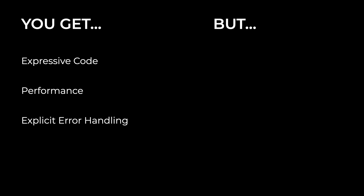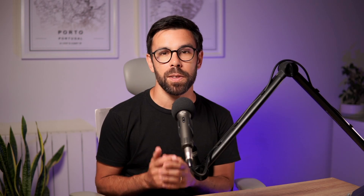However, the result pattern doesn't feel natural — it's not the obvious way to do things in object-oriented programming, and many developers don't use it. That makes it hard to sell to your team, and you don't want a codebase where some methods use the result pattern and others don't. Also, as we've seen, you can still cheat and ignore errors. While the result pattern is an excellent way to avoid exception-based error handling, there's still a place for exceptions. Make sure to watch the next video where I show my simple rule for deciding when to throw an exception versus return a result error.